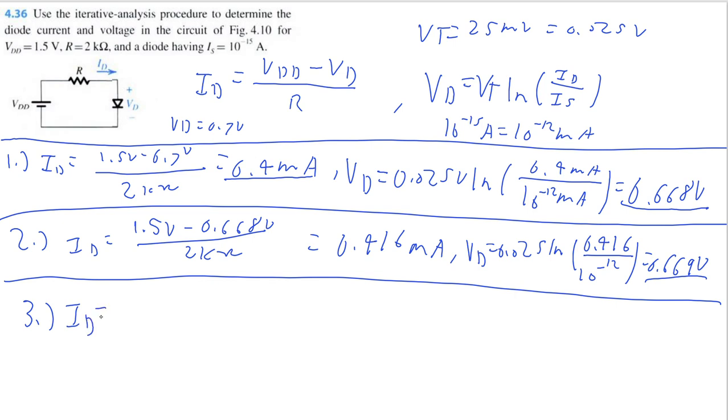Now we're going to recalculate ID with our new voltage calculation. So we get 1.5 volts minus 0.669 volts divided by 2 kiloohms. So now we're like just a little bit off, but we have that extra decimal point of accuracy.